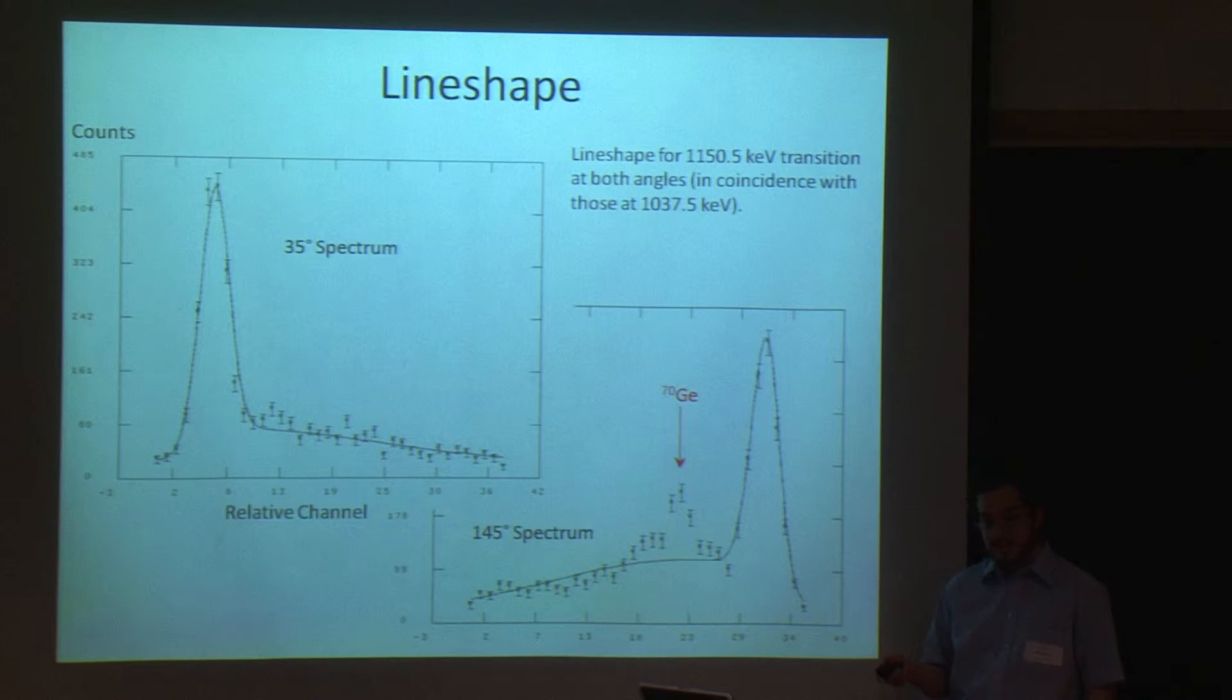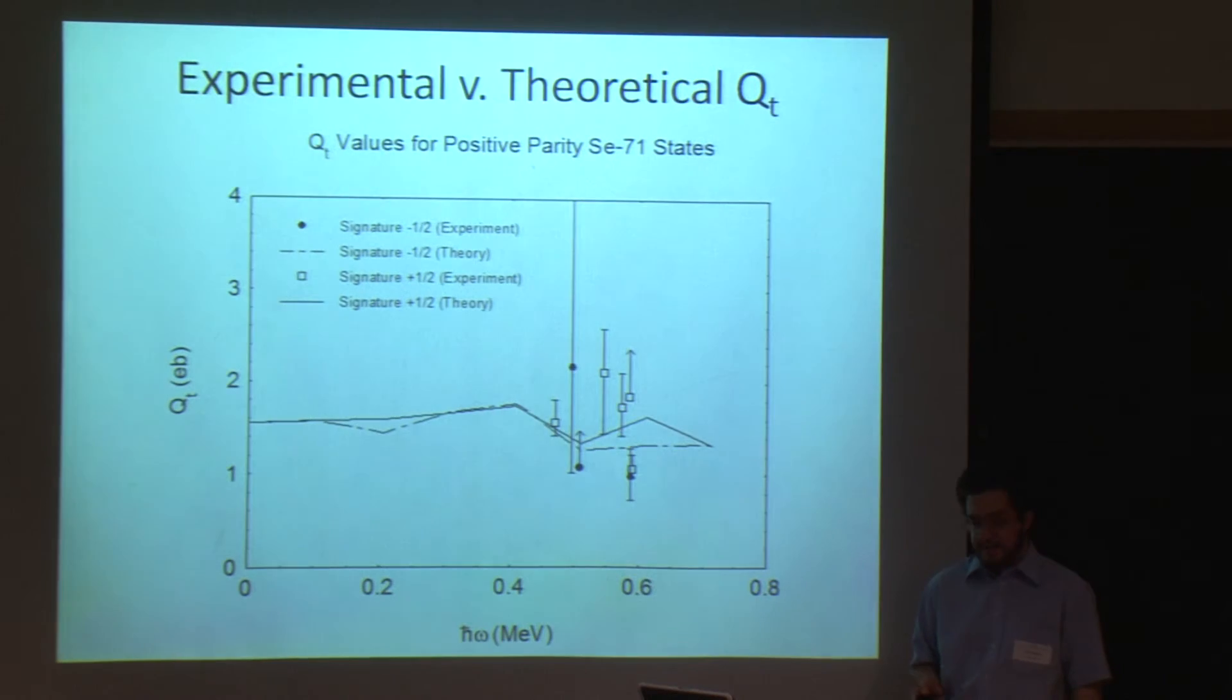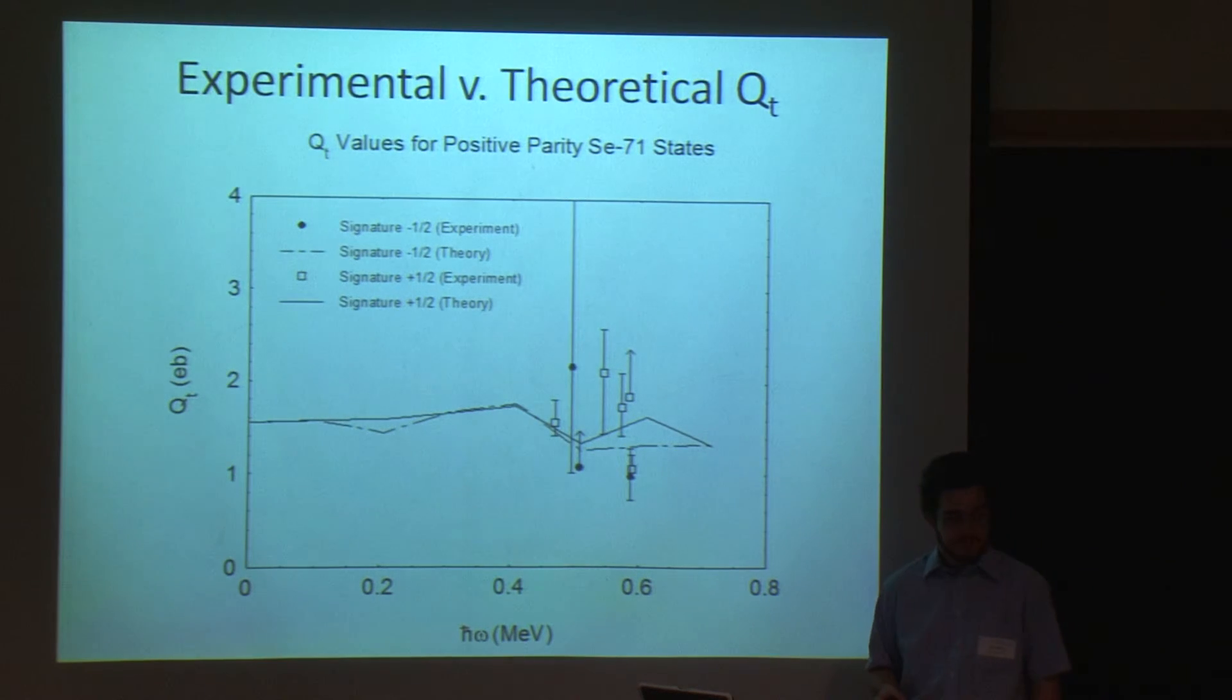And in this case, the lifetime was determined to be about 0.34 picoseconds, or a third of a trillionth of a second. I measured 15 lifetimes in this way, and I used them to compute transition quadrupole moments, or QT values, which is a measure of the degree of collectivity. And I compared them with a theoretical model here, where the positive parity states are shown, and they are in rough agreement with the theory, although a little higher than what the theory predicts on average.